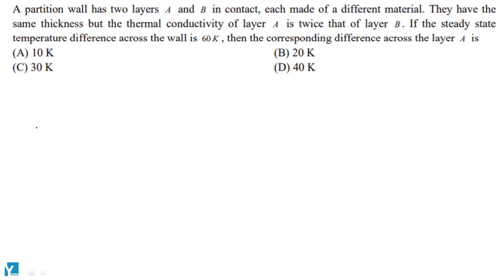A partition wall has two layers A and B in contact, each made of a different material. They have the same thickness, but the thermal conductivity of layer A is twice that of layer B.